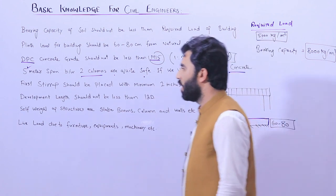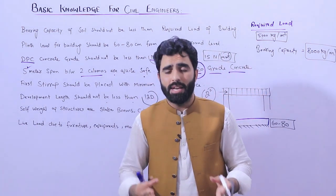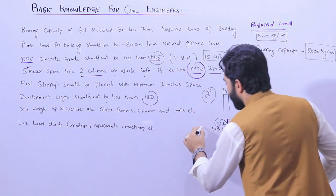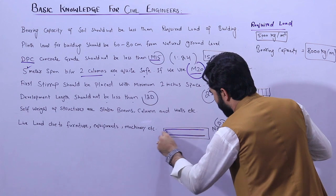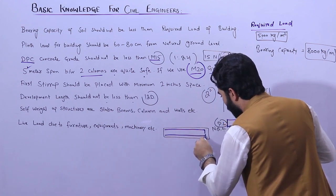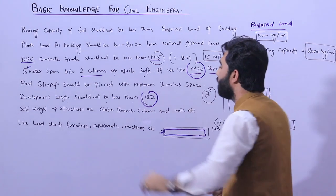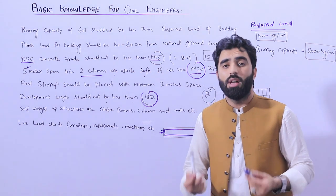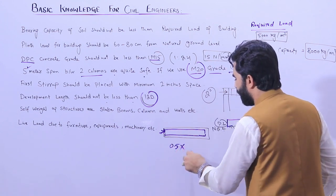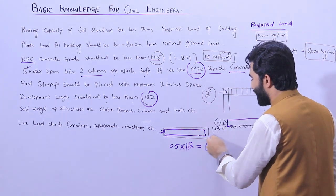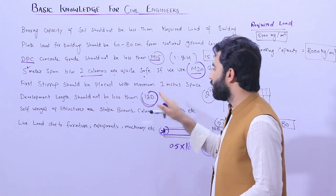Development length should not be less than 12d. We provide development length in beams at the end of the beam — the longitudinal bar goes from downward to upward and upward to downward. This is the development length, which should not be less than 12d, where d is the diameter of the steel rod. For example, if the diameter is 12 mm (0.5 inch), then 12 × 12 mm = 144 mm, which is approximately 6 inches. So development length should not be less than 6 inches when using 12 mm diameter steel rods.